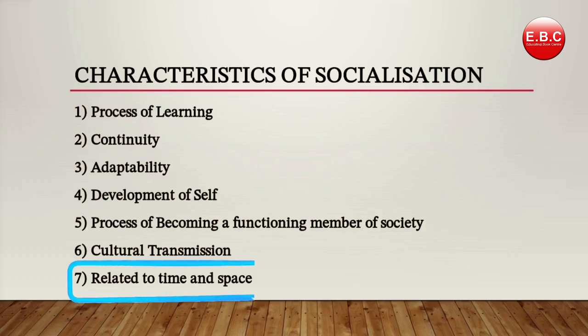The seventh characteristic is that socialization is related to time and space. The process of socialization is connected to the nature of society at a given time and place. In different times and different societies, the nature of socialization can vary, as it is shaped by the specific social context of each era and location.